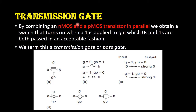In transmission gates, you will be combining NMOS transistor and PMOS transistor in parallel. Here at the top we are having NMOS transistor and at the bottom we are having PMOS transistor. When we connect these two in parallel, we call this a transmission gate. So when we give the input 0, at the output you will be getting strong 0. When we give the input as 1, at the output you will be getting strong 1. This is due to the PMOS transistor and NMOS transistor — so this is the main advantage of the transmission gate.